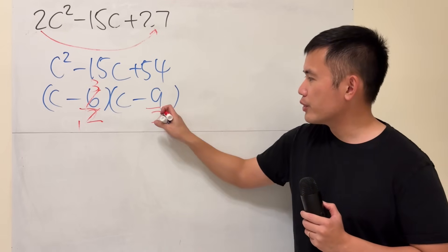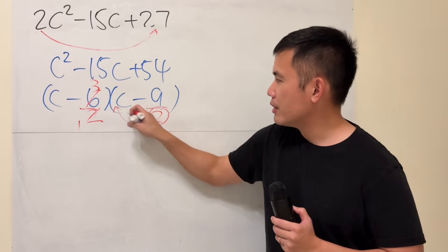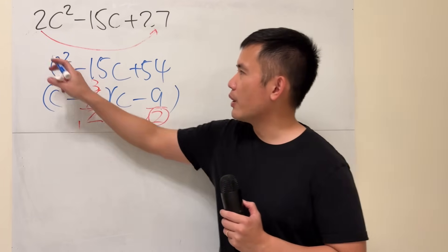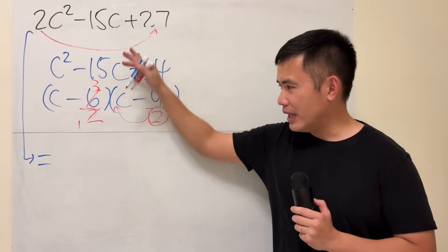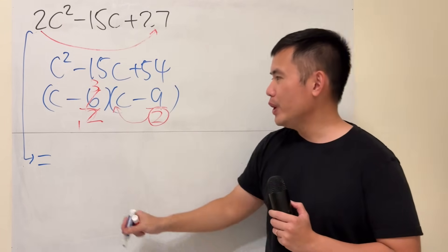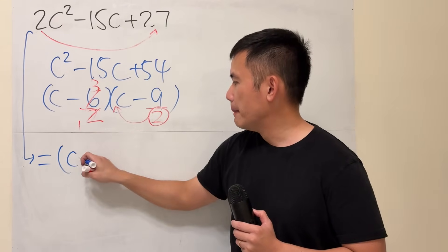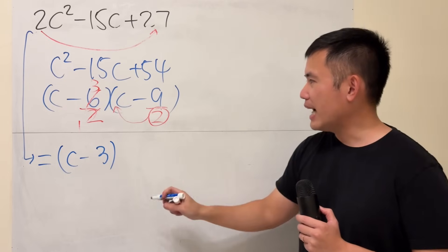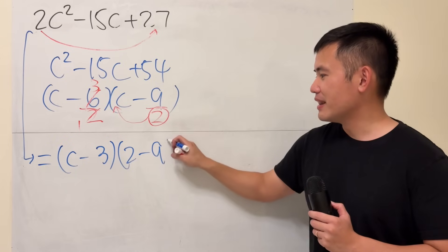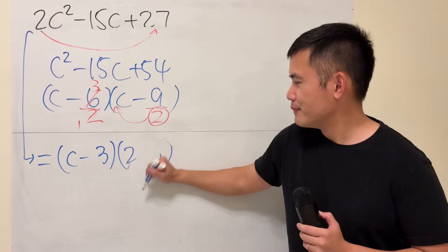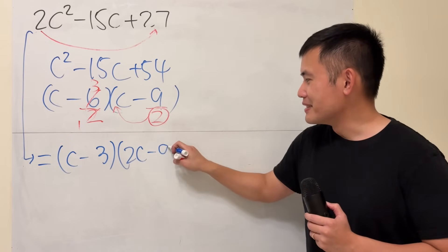Then in that case, what you are going to do is, you are going to take the 2, bring up to here. So finally, I will tell you, this is equal to, this is equal to after this work right here. We will get c minus 3 times, 2 is right here now, and then minus 9. 2c minus 9.